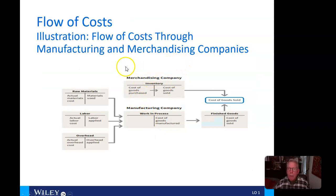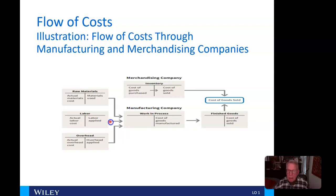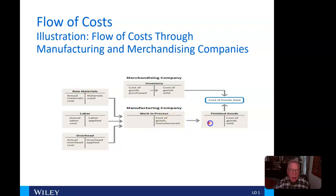If we look at how a manufacturing company works, we buy our raw materials, then those flow into work in process. We apply labor, which also goes into work in process, along with overhead. As we complete items in work in process, they then go into finished goods. Once in finished goods, we either retain them in finished goods inventory or they are sold as cost of goods sold.